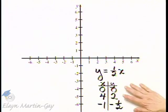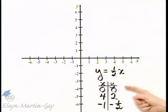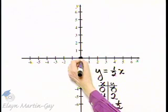Now let's plot these three ordered pair solutions. Zero, zero—that is the origin, right here.